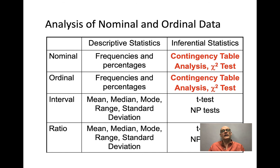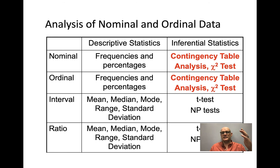When analyzing nominal and ordinal data, the descriptive statistics used to summarize them are frequencies and percentages. For ordinal data, you can also have medians, interquartile ranges, maximums, and minimums. The inferential statistics are contingency tables and chi-square tests. For interval ratio data, we can use means, medians, modes, range, standard deviation, t-tests, and other parametric or non-parametric tests.